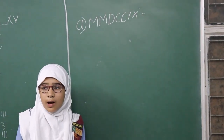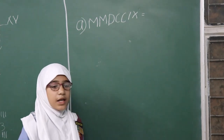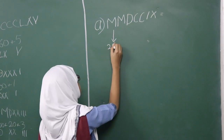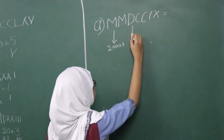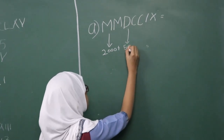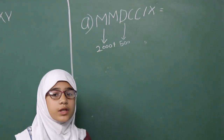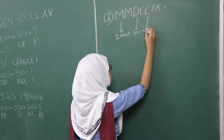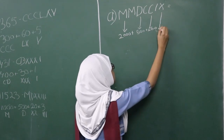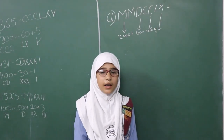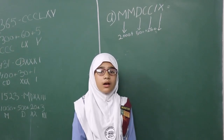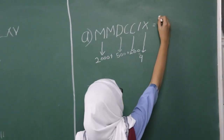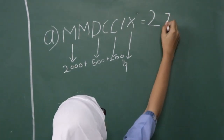As my dear friend Adiba told, M is one thousand, so two M's are two thousand. D is five hundred, and C is one hundred, so two C's are two hundred. IX is nine, because when a smaller number comes before a greater number, we subtract the values. So the total is two thousand, seven hundred and nine.